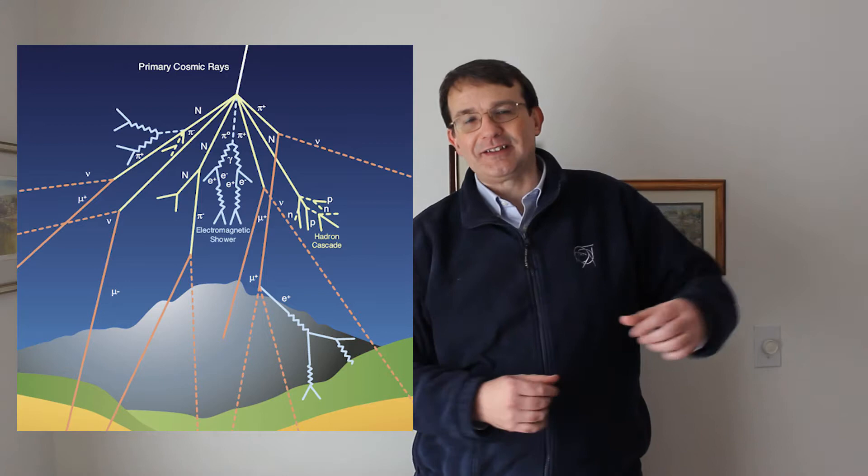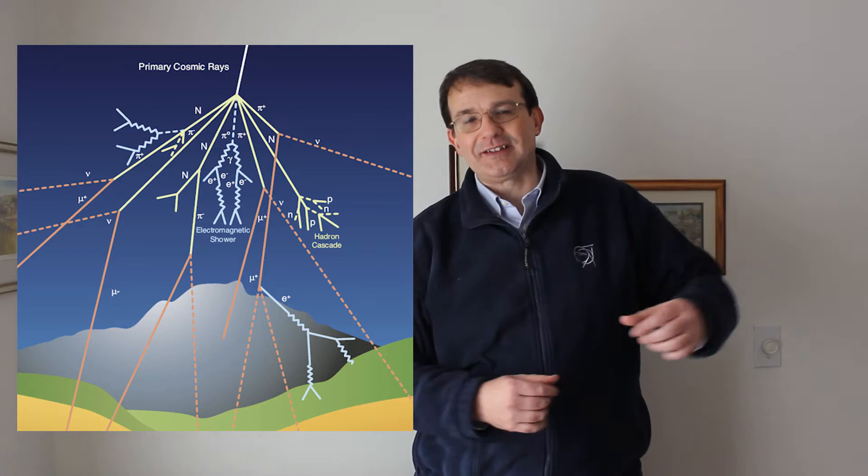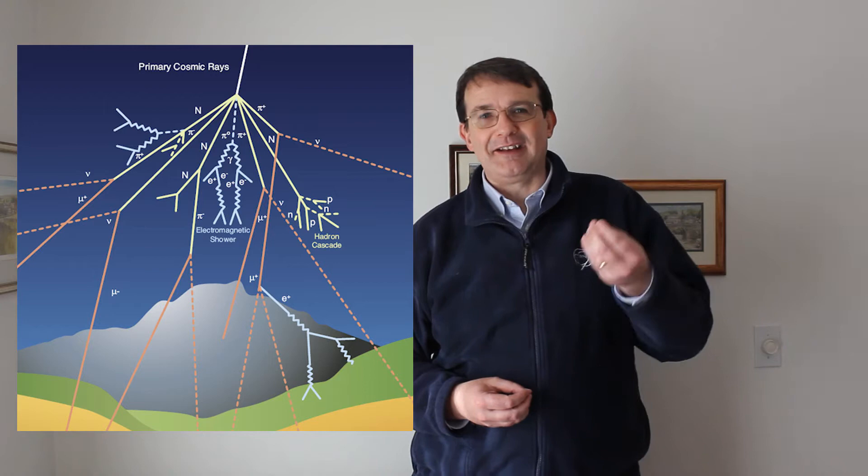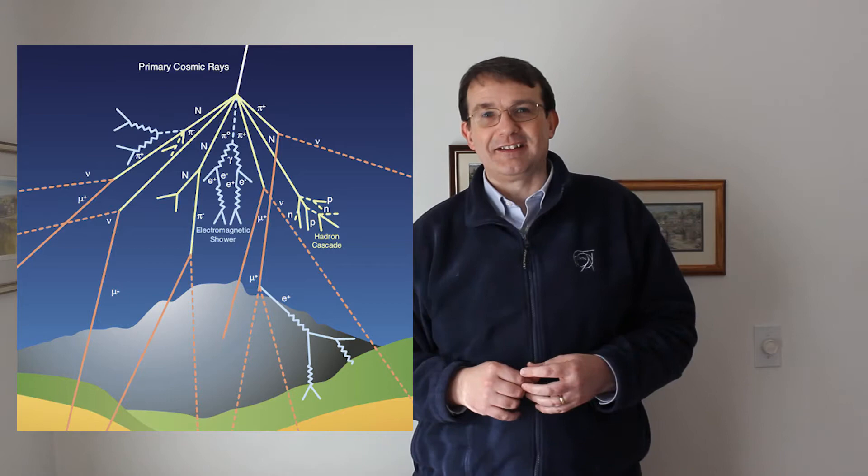Cosmic rays were limited by availability. The detectors at the time required direct interaction with particles, so you had to put your detector where the particles were. Cosmic rays come from outer space and strike the top of the Earth's atmosphere, generating showers of secondary particles that make it all the way to the surface. But to access the highest energy particles, you needed your detector way up in the sky to see the primary particles coming in and interacting.